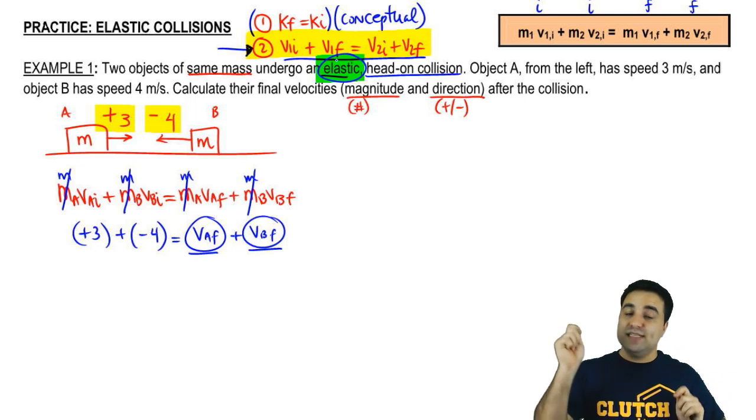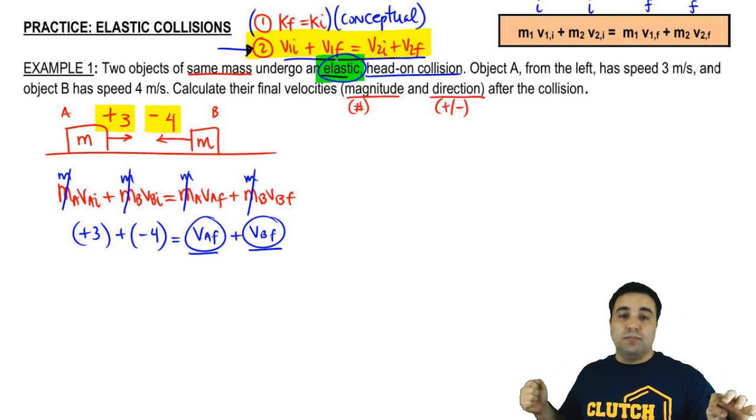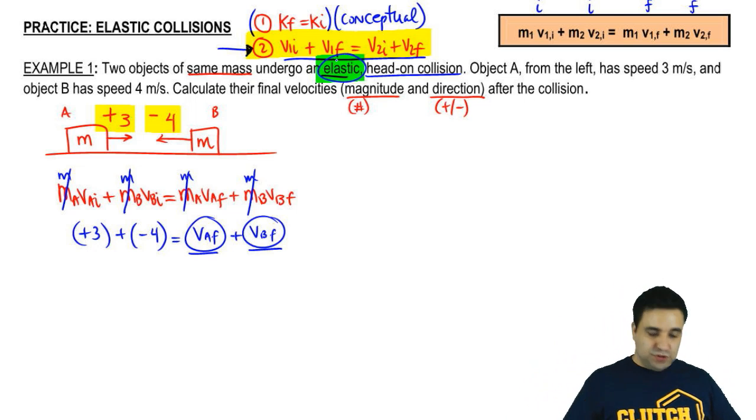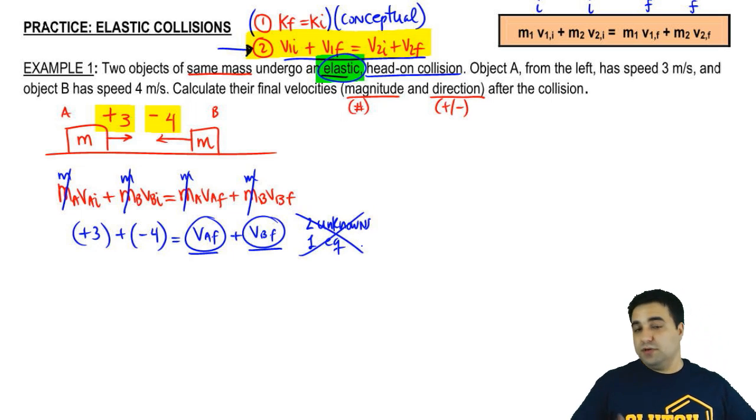Instead of giving one of these two velocities, they replaced that with the information that this is elastic. So, it's a give and take. I tell you the type of collision, but then I give you one less number for you to be able to solve this problem. So instead of giving you a number, I told you that it was elastic, and you can still solve it. But this is two unknowns with just one equation, which means you can't solve it. All right, what do you do? You need another equation.